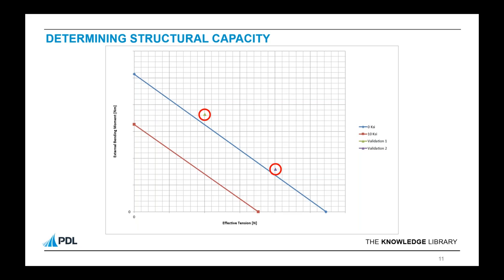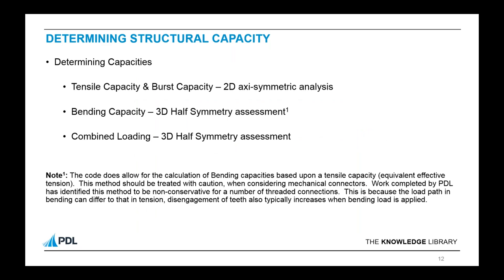To establish those capacities, different approaches can be taken within the analysis. Tensile capacity, base capacity, internal pressure, and external pressure are all symmetric loadings — so long as your geometry allows, you can treat those as 2D axisymmetric analyses, which are less computationally expensive than 3D. When we then start thinking about bending capacities or combined loading, this is where you need 3D half-symmetry models. The code currently allows you to calculate a bending capacity based upon a tensile capacity — called the equivalent effective tension method — but this should be treated with caution.